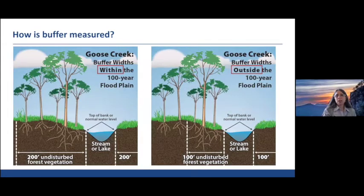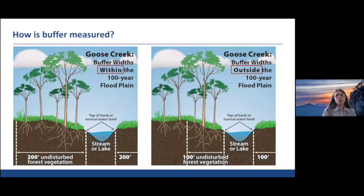Goose Creek is the one oddity. Because it is so small and a federally endangered species is so dependent on its water quality, those buffers are either 100 or 200 feet wide and are always undisturbed forest vegetation. The difference between 100 and 200 feet depends on whether you're inside or outside of the 100-year floodplain, so that rule is very different in how you apply the buffer width.